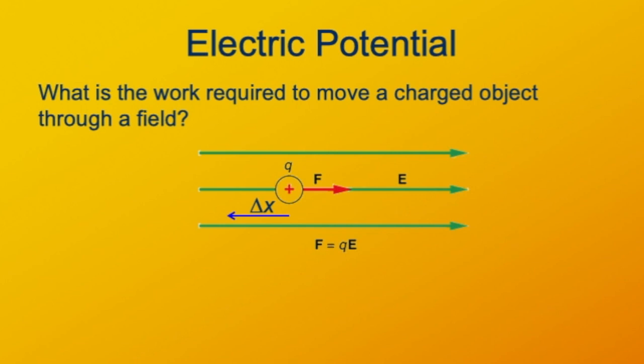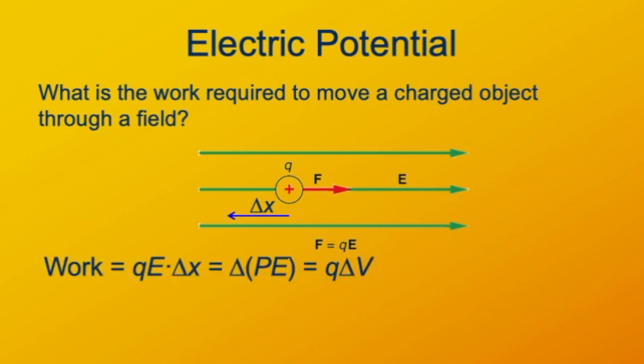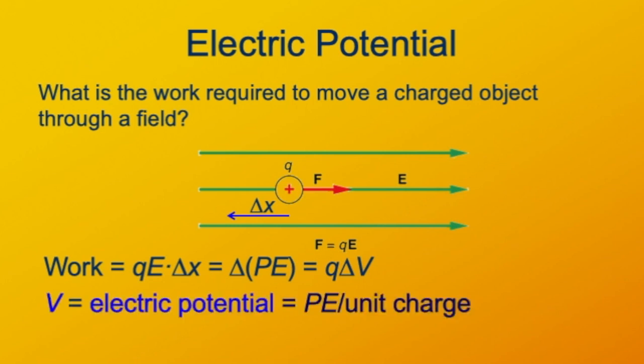If we're going to push the charge against the field a distance delta X, that's going to require some work, just like lifting up an object in a gravitational field increases its gravitational potential energy and requires some work. The work is going to be the force times the displacement, or QE times delta X, which is the change in electric potential energy of the charge. We'll define that as Q times delta V, V being the electric potential or the potential energy per unit charge.